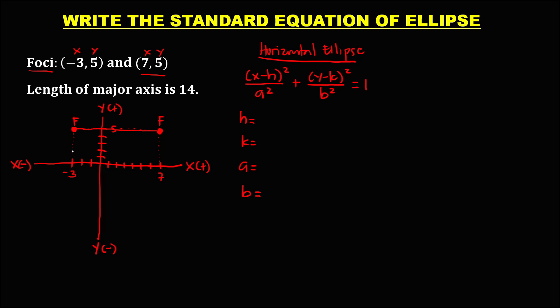From the foci, we locate the center using the counting method. Counting between the two foci, we get 10 units total. Dividing by 2 to locate the center: 10 divided by 2 equals 5.